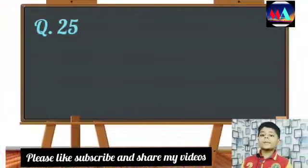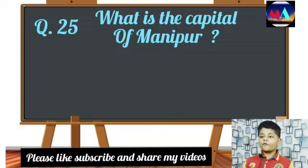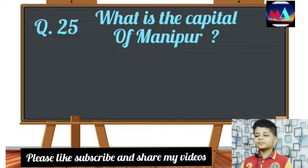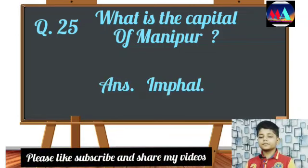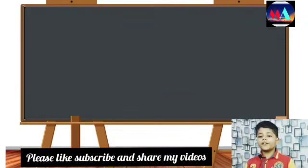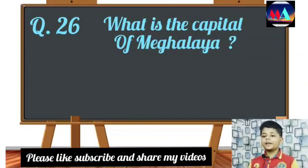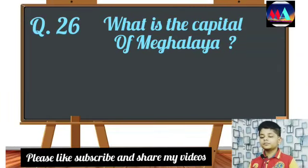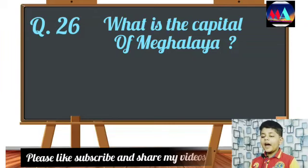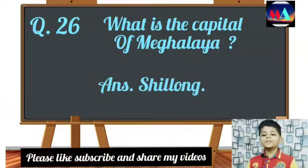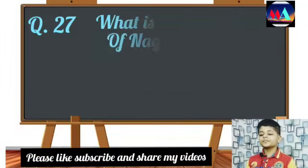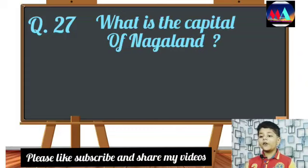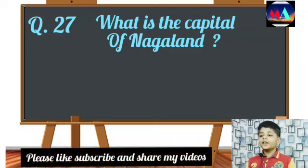Question number twenty-five: What is the capital of Manipur? Answer: Imphal. Question number twenty-six: What is the capital of Meghalaya? Answer: Shillong. Question number twenty-seven: What is the capital of Nagaland? Answer: Kohima.